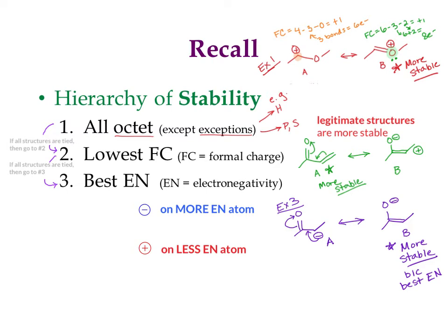Remember, this is a hierarchy — you have to go in order. In example 3 (purple), B is better because the negative is on oxygen, which is more electronegative. But we first confirmed that both A and B are all octet and both have a -1 formal charge. In example 1 (red), a positive on carbon would actually be better by electronegativity since carbon is less electronegative, but those structures aren't both all octet, so we never even reach that rule. You can't treat all three rules as equal — you must go in order to get the right answer.